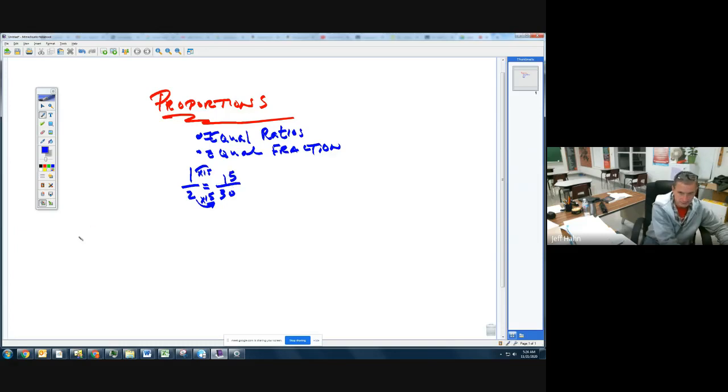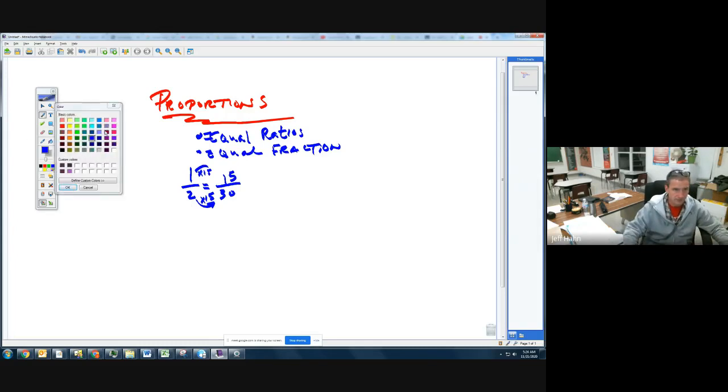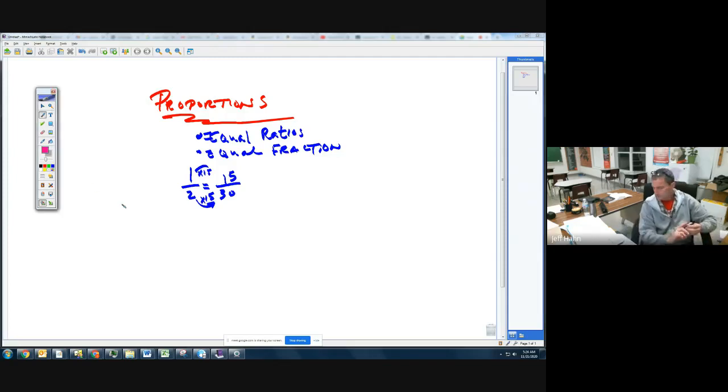But unfortunately, sometimes you have to put your big boy pants on, and these are not going to work out that easy. And we have to figure out how to solve them. They're just not that simple. For example, if you come up with a proportion that looks like this.